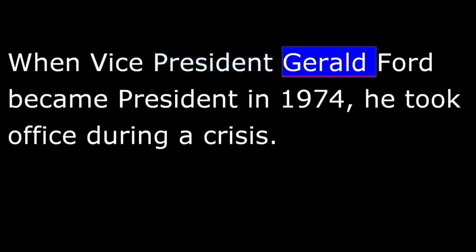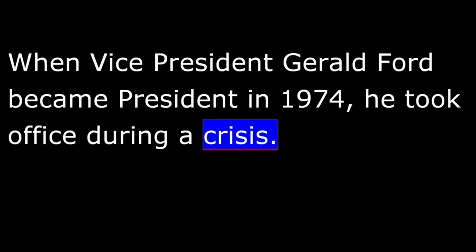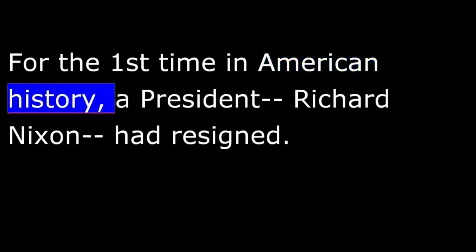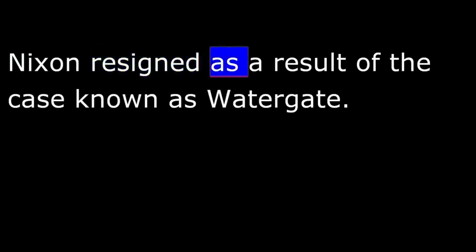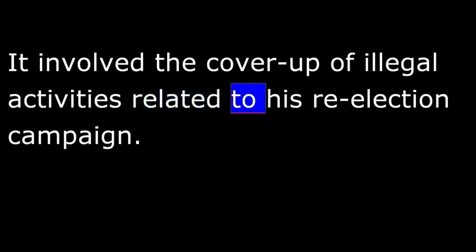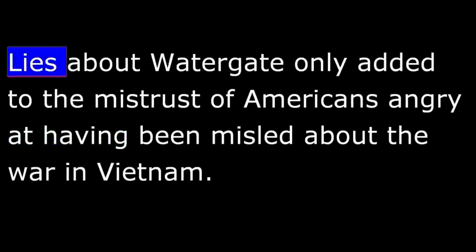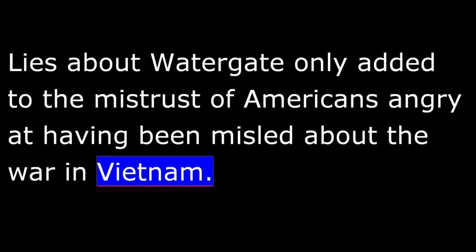When Vice President Gerald Ford became president in 1974, he took office during a crisis. For the first time in American history, a president, Richard Nixon, had resigned. Nixon resigned as a result of the case known as Watergate. It involved the cover-up of illegal activities related to his re-election campaign. Lies about Watergate only added to the mistrust of Americans angry at having been misled about the war in Vietnam. After Vietnam and Watergate, many people no longer believed their public officials.